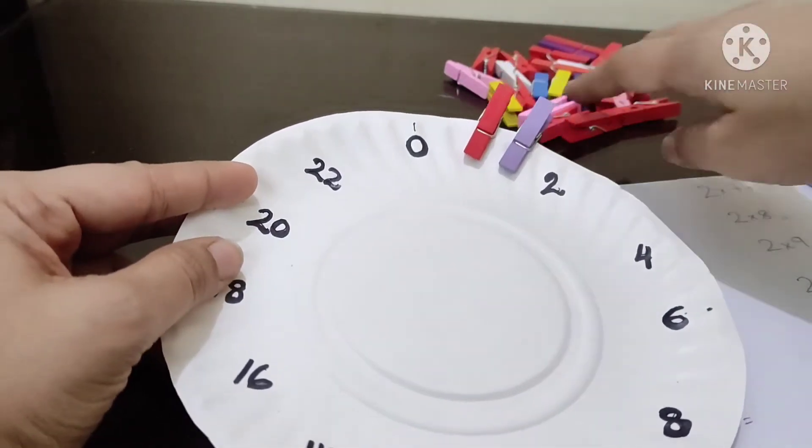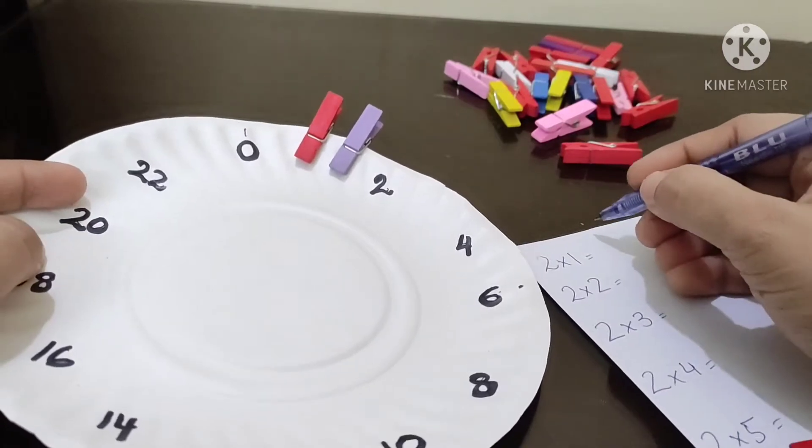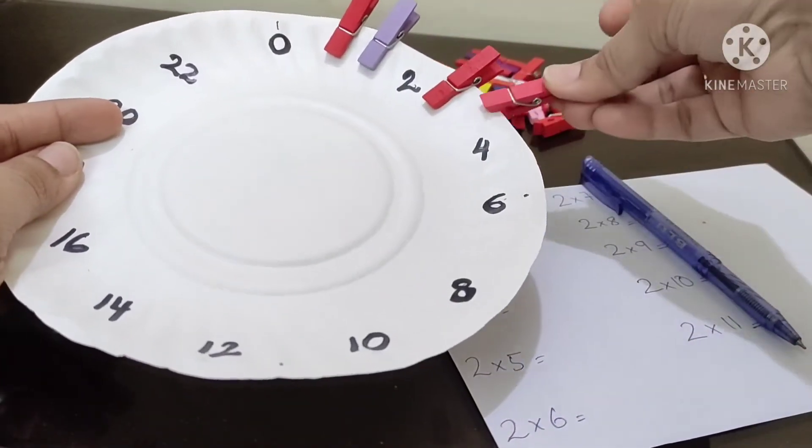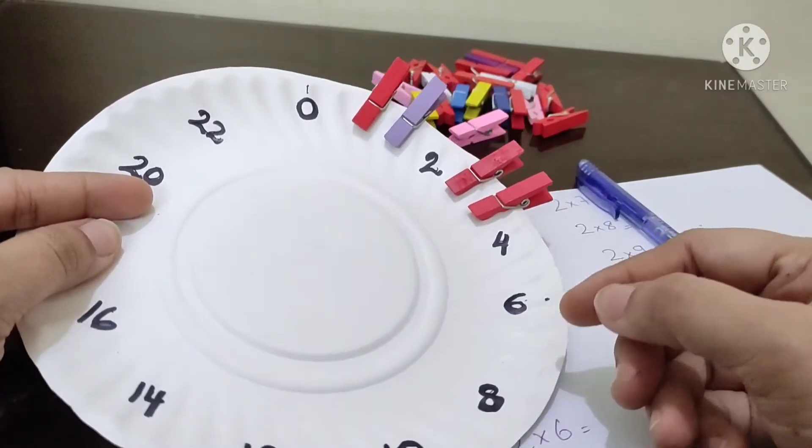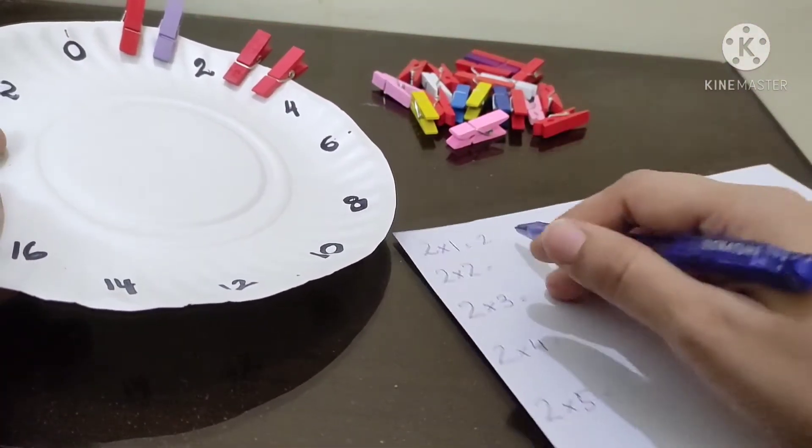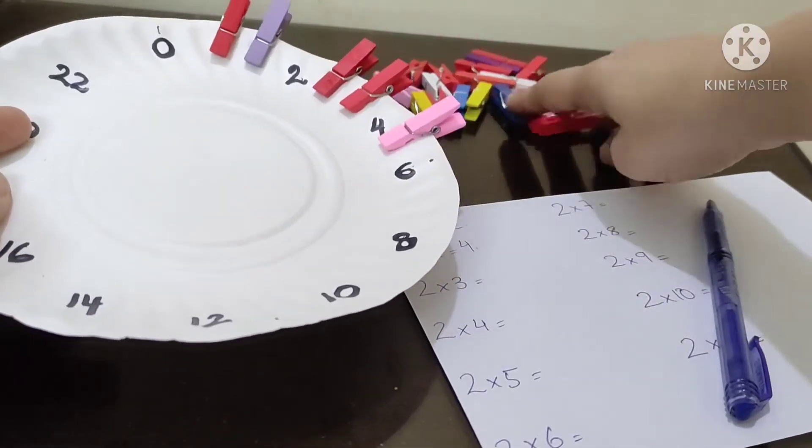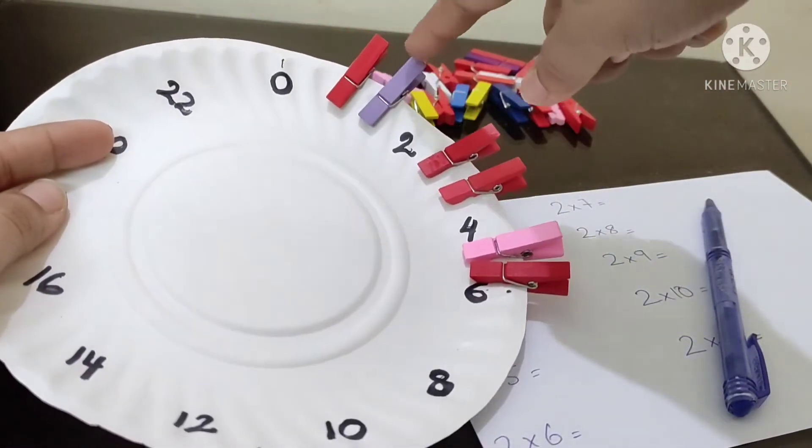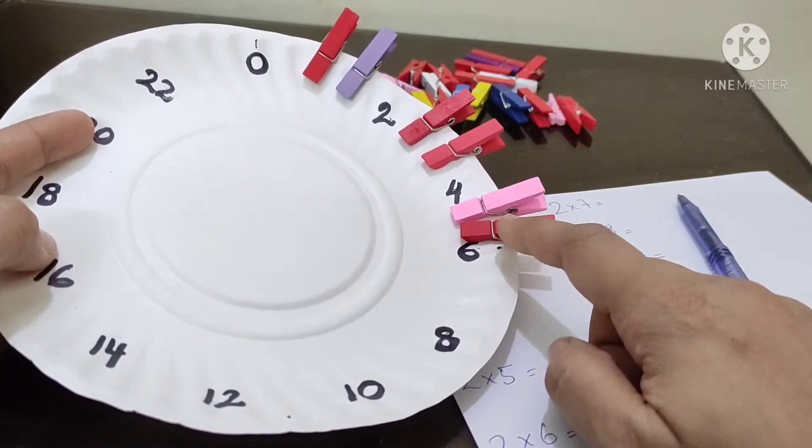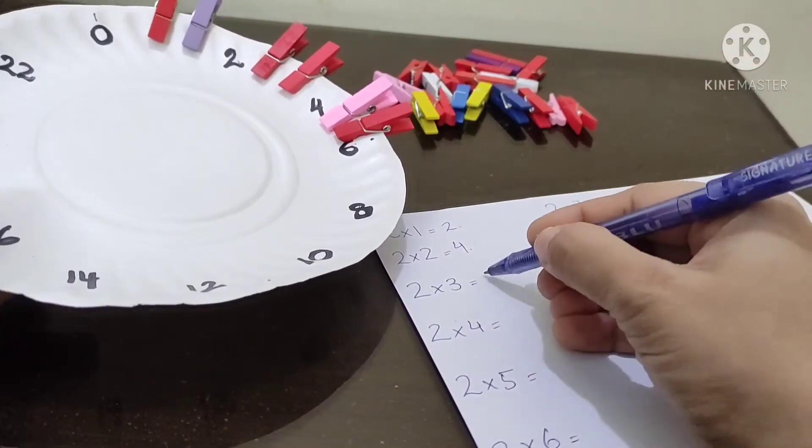So for example it's two, so two times one is two. The same way we will add two more or skip two numbers in the number line. So what will be the next number? One, two, three, four. So two times two is four. Let's move on to adding or skipping two numbers. We'll count one, two, three, four, five, six. You can tell your child to write the number that they get after adding these clips. So two times three is six.